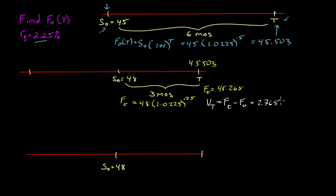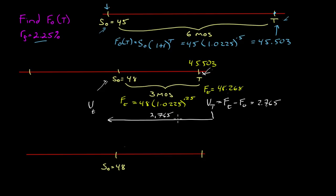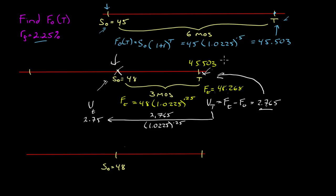But we have to look at where we are on the timeline. This 2.765 is at this point in the future. If we're being asked for the value at time t — at the current point — this money is at the wrong point on the timeline. We have to bring it back. So we take 2.765 divided by (1.0225)^0.25 and we get 2.75. So we brought this forward, compared the two prices, got the difference, and then discounted that difference back to where we are on the timeline.